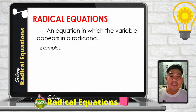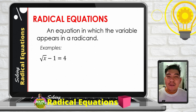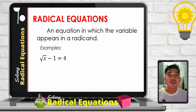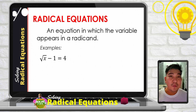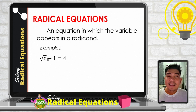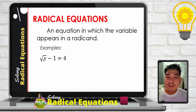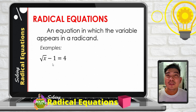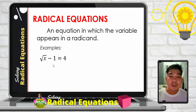Let us have some examples. We have the square root of x plus one is equal to 4. As you can see, the variable x is inside the radical symbol — the square root — so therefore it is considered a radical equation.